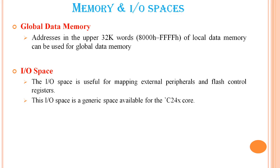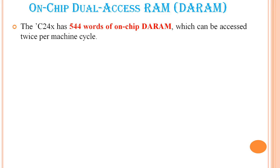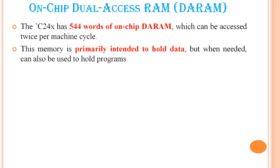The first is the on-chip memory: on-chip dual-access RAM. DA RAM is dual-access RAM. The C24 accesses 544 words of on-chip DA RAM, which can be accessed twice per machine cycle. This memory is primarily intended to hold data.